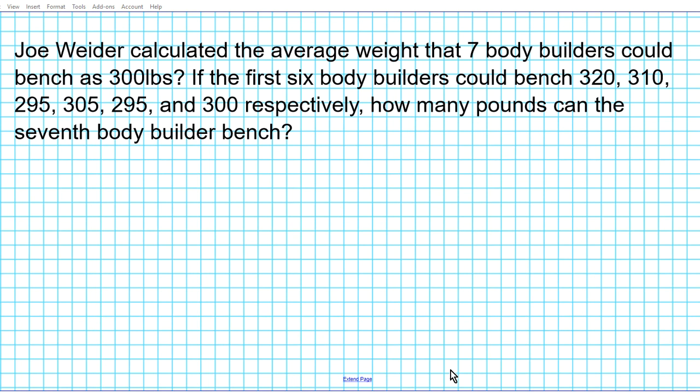Let's take a look at another question. Joe Wider calculated the average weight that 7 bodybuilders could bench as 300 pounds. If the first 6 bodybuilders could bench 320, 310, 295, 305, 295, and 300 pounds respectively, how many pounds can the 7th bodybuilder bench?